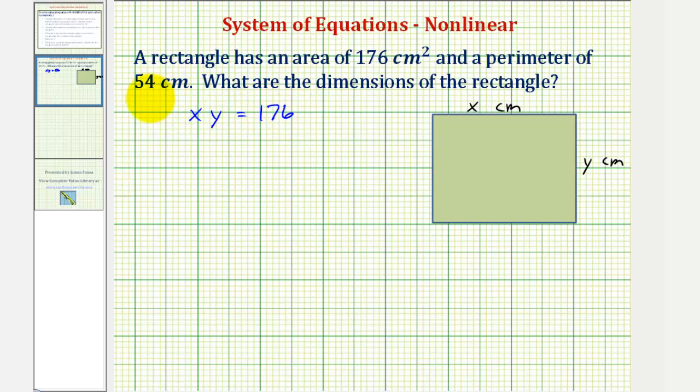We also know the perimeter is equal to 54 centimeters, where the perimeter is the sum of the lengths of the four sides. Therefore, 2x plus 2y must equal 54.